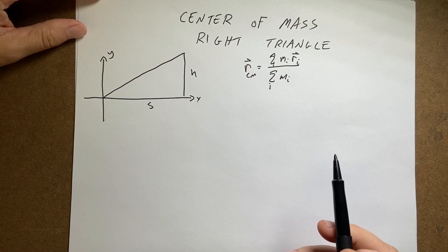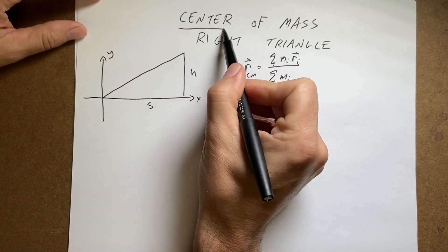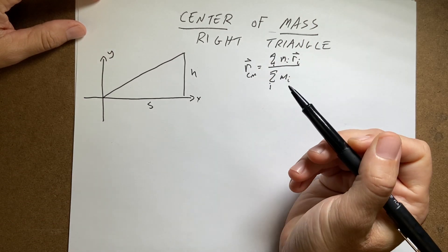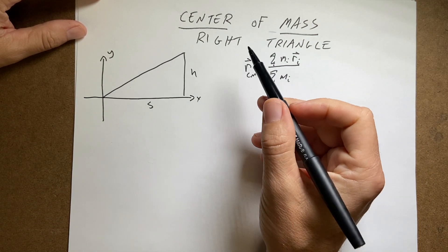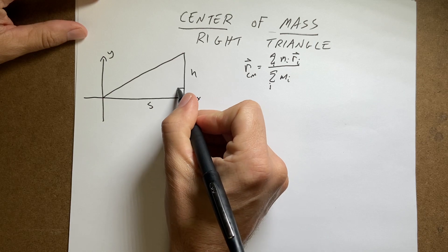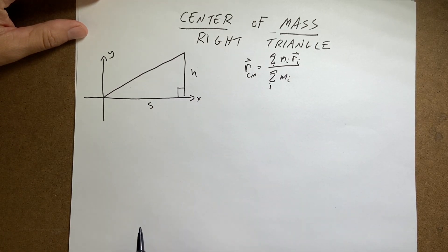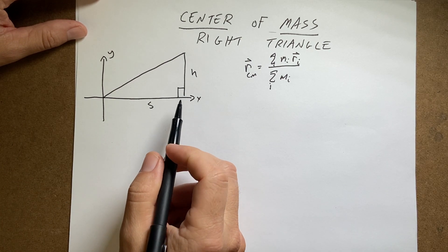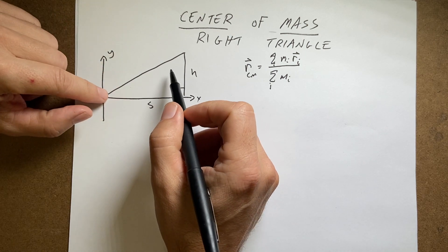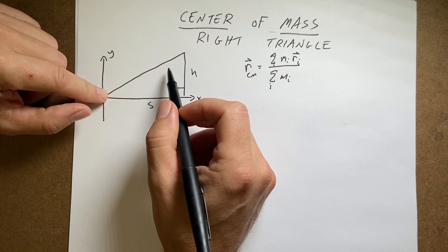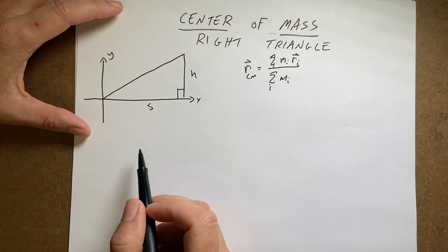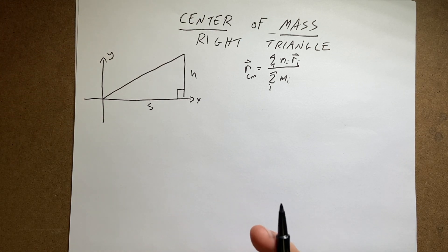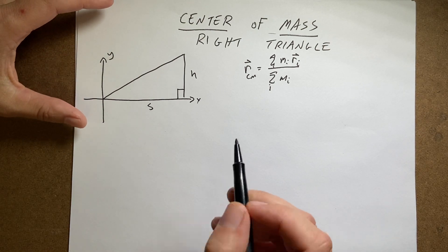How about a fun example of center of mass? Suppose I have this right triangle — you know it's a right triangle because I put that little symbol there. Suppose it's like a piece of sheet metal that's cut out, and the question is: where is the center of mass?